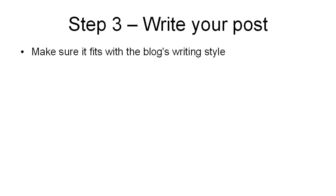Step number three, you want to write your post. First and foremost, make sure that it fits with the blog's writing style. If the writing style is fairly formal and traditional, write your article that way. If the blog style is fairly upbeat and contemporary with lots of slang, make sure your article fits in with that. If it's British English, run it through a British English spell checker; if it's American English, the same applies — just to make sure that everything fits in with the blog's writing style.